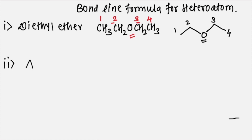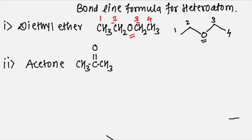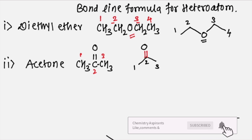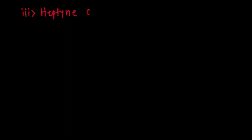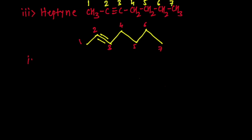For acetone (CH3-C(=O)-CH3), the three carbon atoms are drawn in zigzag, and on carbon number 2 there is a double bond with the oxygen atom, which is written explicitly as the heteroatom. Additional examples shown include heptyne and benzene, demonstrating how triple bonds and aromatic rings are represented in bond line formula.